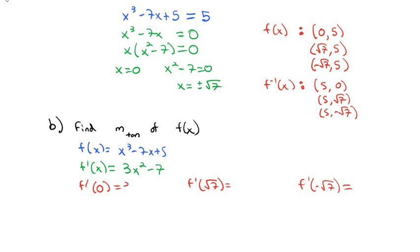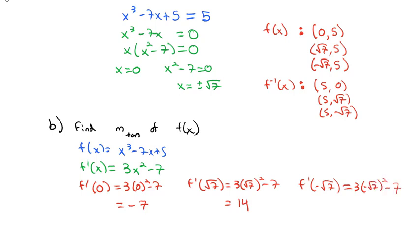Plugging 0 into the derivative: 3 times 0 squared minus 7 equals negative 7. Plugging square root of 7 in: 3 times (√7)² minus 7 equals 3 times 7 minus 7, which is 21 minus 7, equal to 14. For negative square root of 7, squaring a negative gives the same result as squaring the positive, so again 3 times 7 minus 7 equals 14.